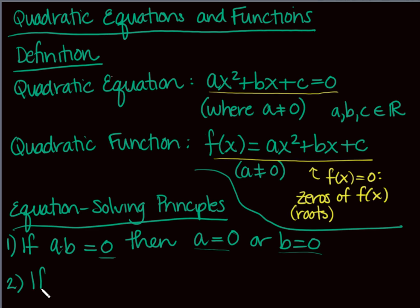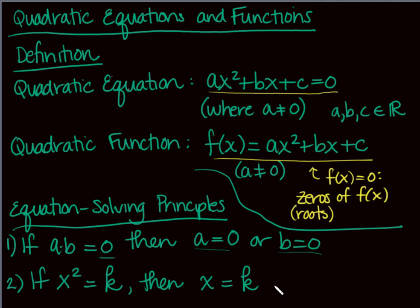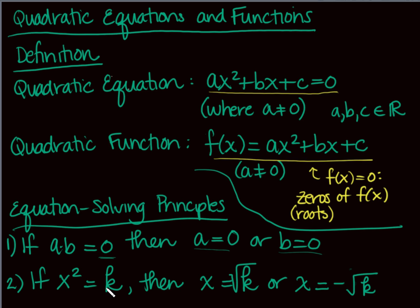The second is the principle of square roots: if x² = k where k is a real number, then when you square root both sides you must consider the positive and negative root. Any time you bring in a square root that wasn't there before, you have to think about the plus or minus. For example, x² = 4 has two solutions: 2 and negative 2.